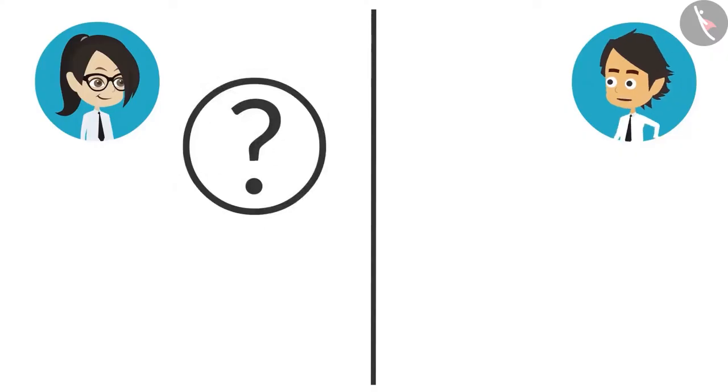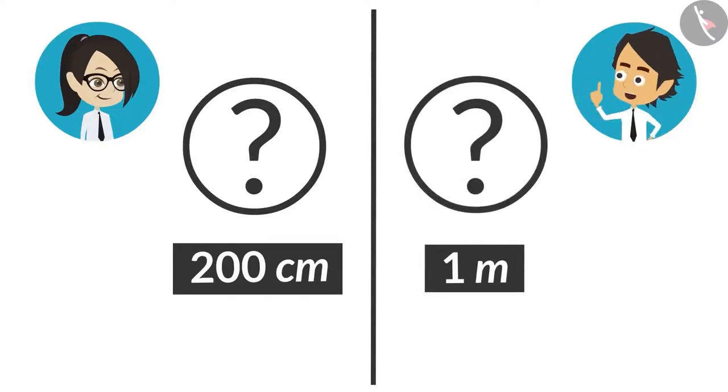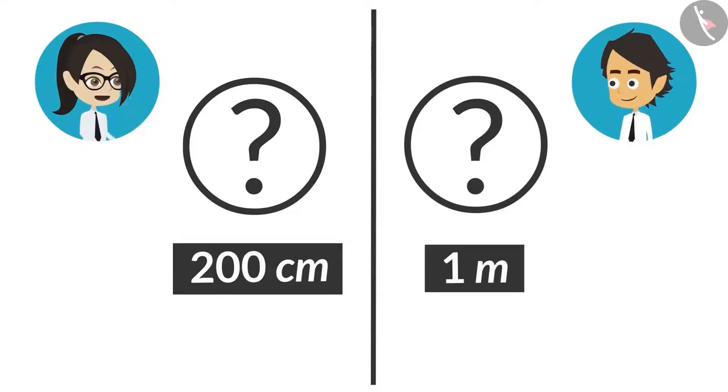The length of an object is 200 centimeters and the length of the second object is 1 meter. Tell me which one among them is longer? What is there to think here? The object with 1 meter length is bigger. How? You only told me that meter is big and centimeter is small. Therefore, 1 meter should be bigger.